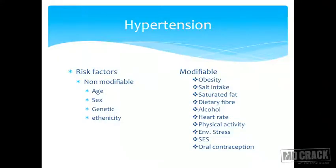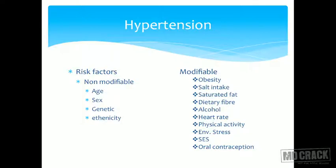Coming to the slide, you have risk factors for hypertension. Like risk factors for CHD, they have been divided into modifiable and non-modifiable risk factors. Non-modifiable risk factors are age, sex, genetics, and ethnicity. The modifiable risk factors are obesity, salt intake, saturated fat, alcohol, heart rate, physical activity, environmental stress, lower socioeconomic status, and oral contraception. Let us run down this list one by one.